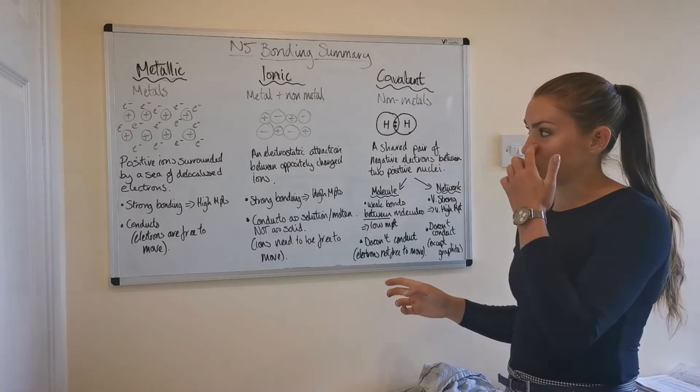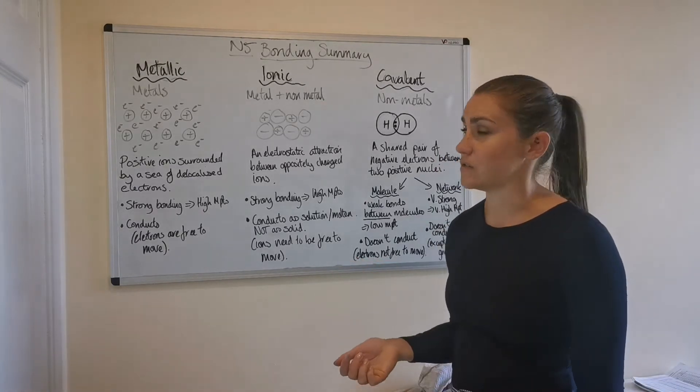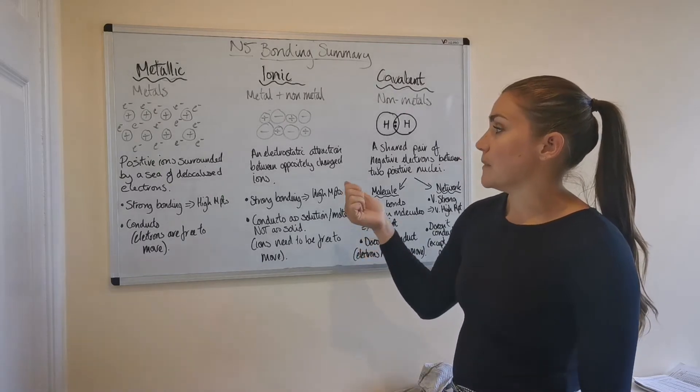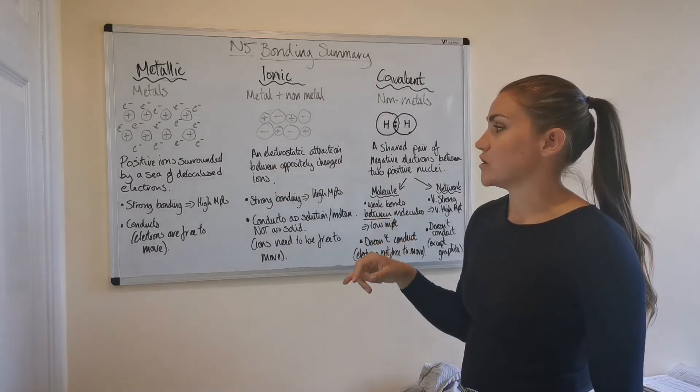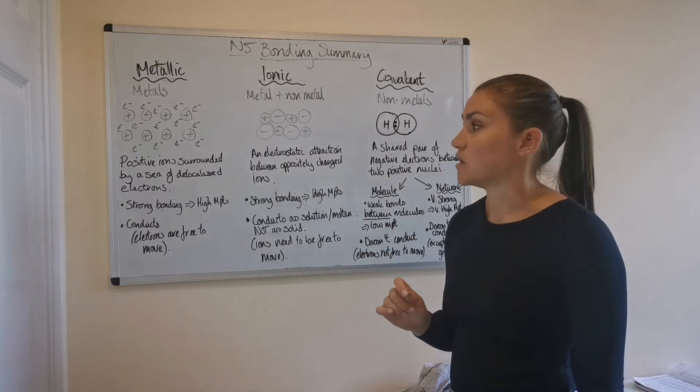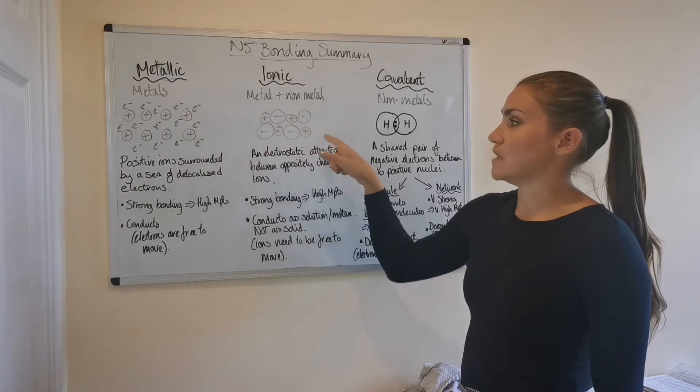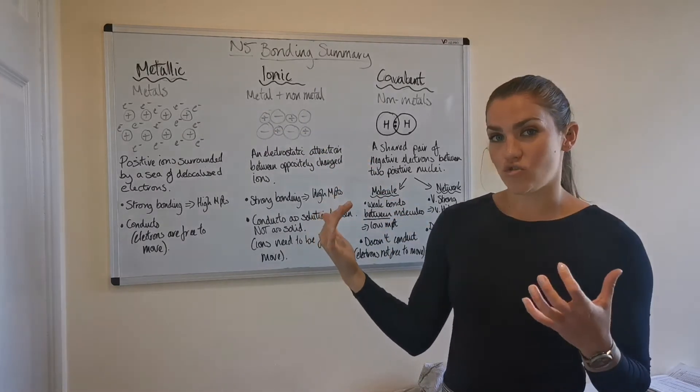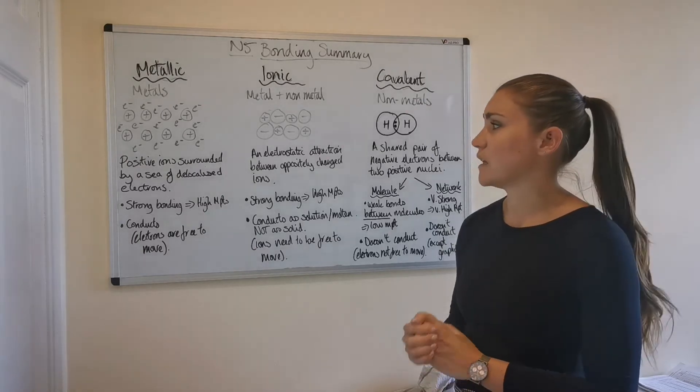So then if we go into ionic bonding, so ionic bonding occurs between a metal and a non-metal atom generally. And it's described as an electrostatic attraction between oppositely charged ions. So here we've got alternating positive and negative charged ions. And they tend to make a 3D structure, which is known as an ionic lattice. And that's when it's a solid.